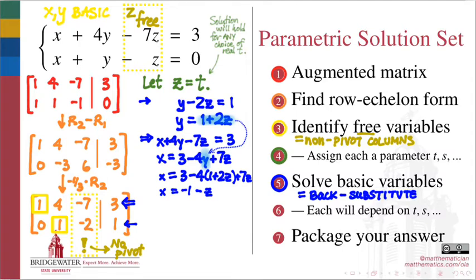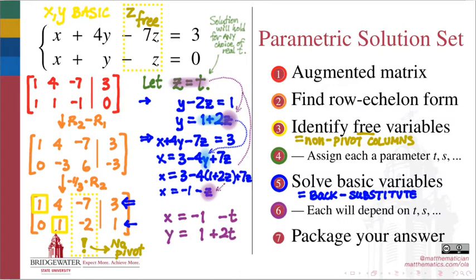Once your basic variables have each been solved in terms of the free variables, remember that your free variables now have new parameter names, and substitute those names into your expressions. That will make x equal to negative 1 minus t, and y equal to 1 plus 2t.